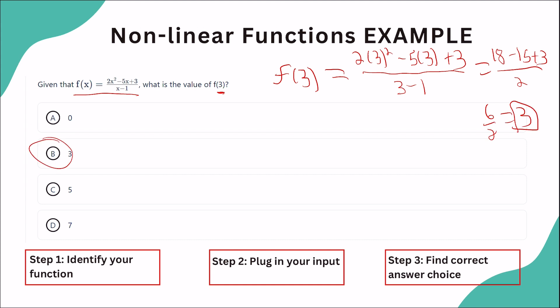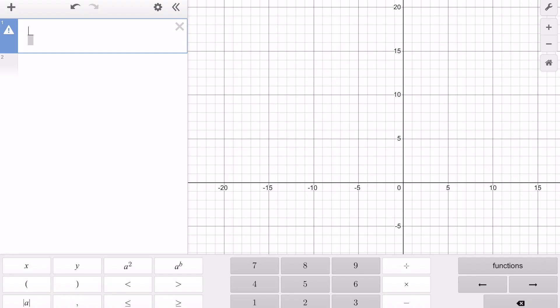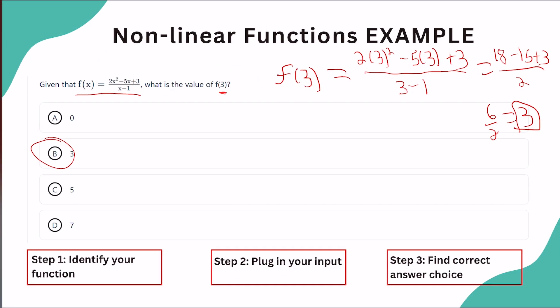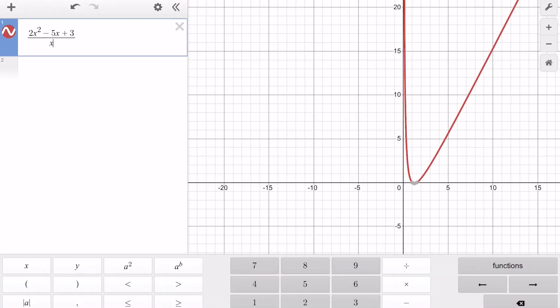And these ones actually have an interesting Desmos use case too, so let's do that together. So now that we're in Desmos, let's plug in our original equation, which is going to be 2x squared minus 5x plus 3, and this is going to be all over x minus 1.